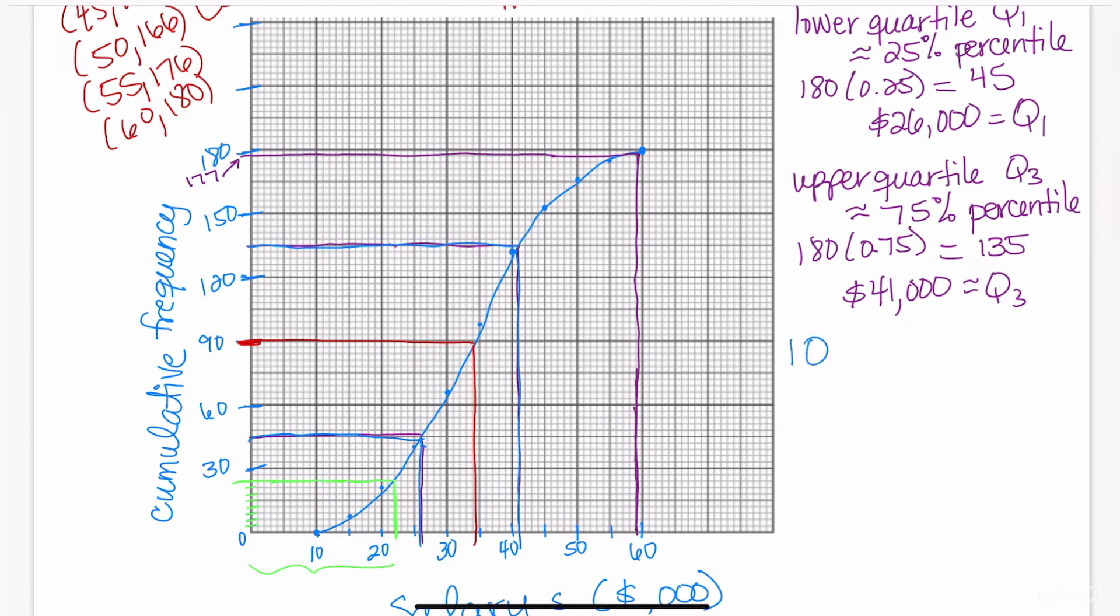So in order to find the interquartile range, we've already done most of the work. IQR is just Q3 minus Q1. So in this case, it's going to be 41,000 minus 26,000 because that's what we got for our third quartile and our first quartile. And this means that the difference is going to be $15,000. So our interquartile range is $15,000.